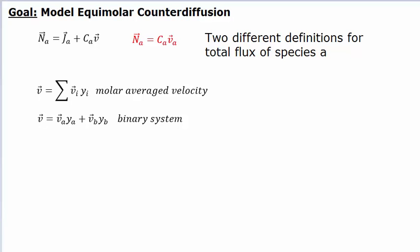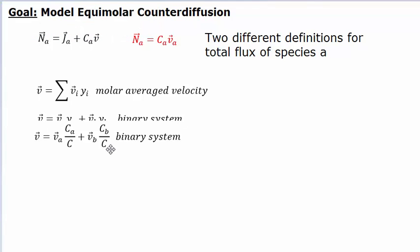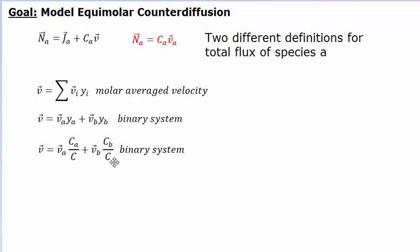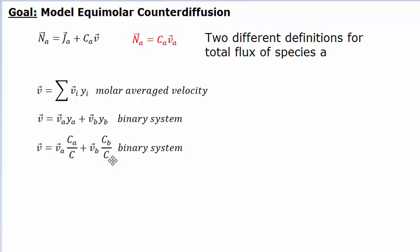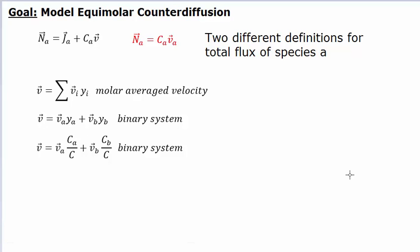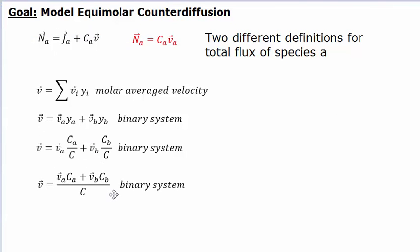The way we write this in concentration is we take those mole fractions and convert them into concentrations, because Y_A is simply C_A over C, so we transcribe those in here. Now that both of these are divided by C, we could algebraically represent it like this.